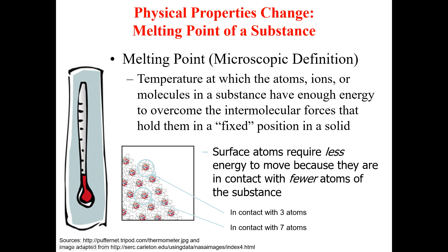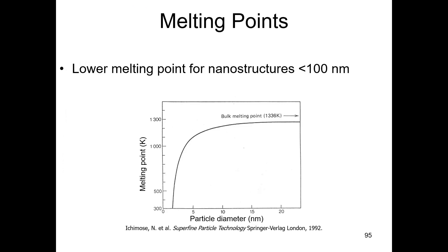As a result, research has shown that nanostructure materials have a lower melting point — they require a lower temperature to melt — for nanostructures with a size smaller than 100 nanometers, compared to bulk materials.